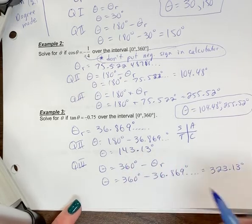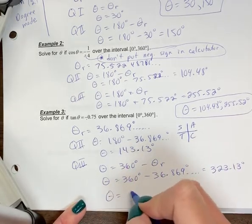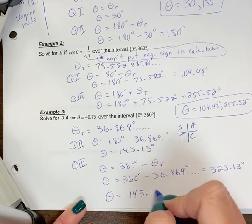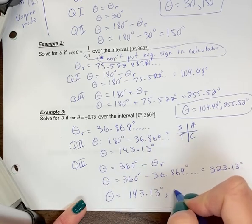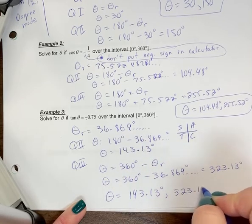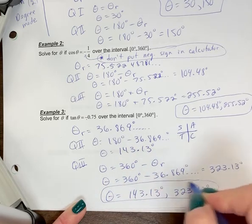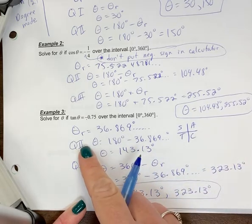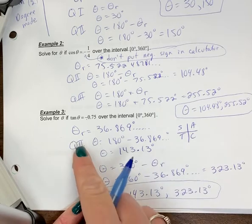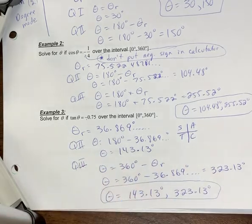So here's your two answers. And again, I just want it to really stand out. Your goal is to find theta. These are angles in standard position. So if you were to sketch them, you would have two angles in quadrant, in between 0 and 360, one in quadrant two, one in quadrant four.